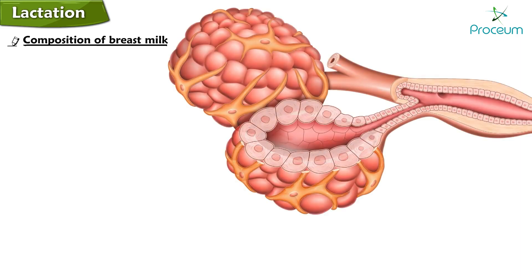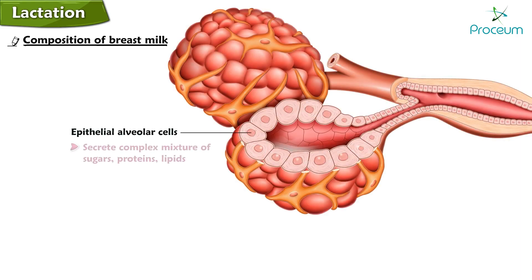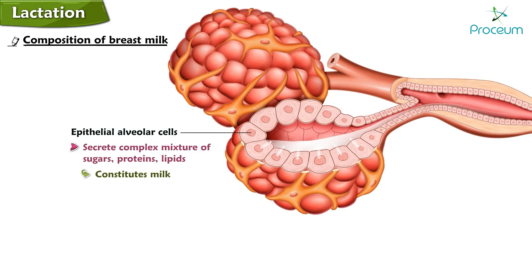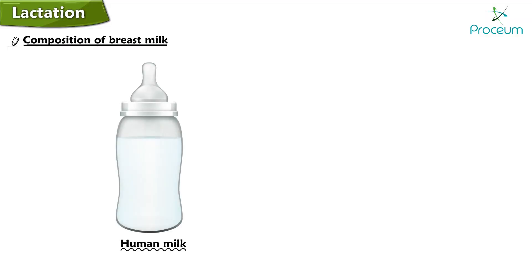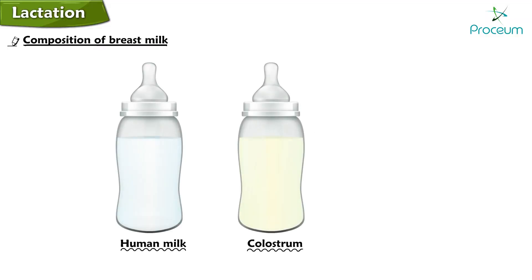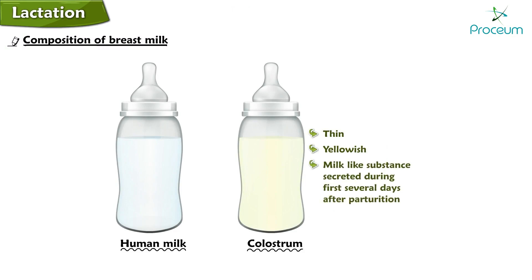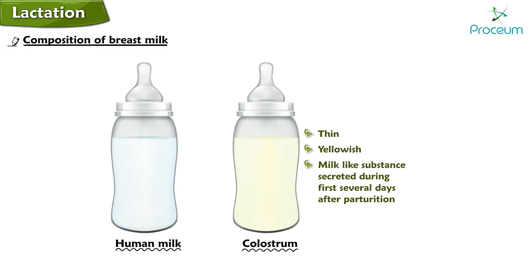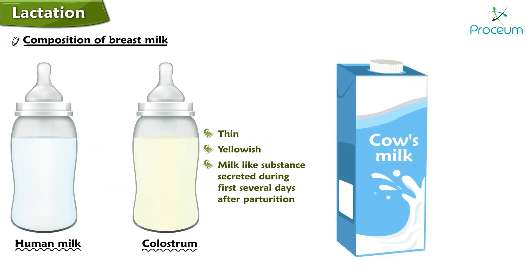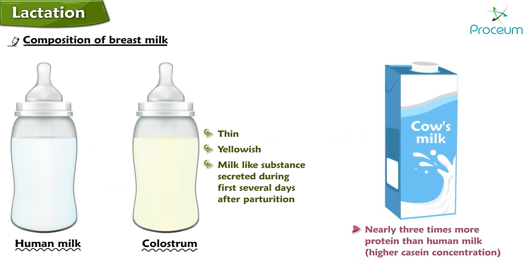Galactopoietic hormones maintain milk production after it has been established; these include prolactin, which is the primary hormone, as well as cortisol and other metabolic hormones. The epithelial alveolar cells of the mammary gland secrete a complex mixture of sugars, proteins, lipids, and other substances that constitute milk. The composition of human milk differs from that of colostrum, the thin yellowish milk-like substance secreted during the first several days after parturition.